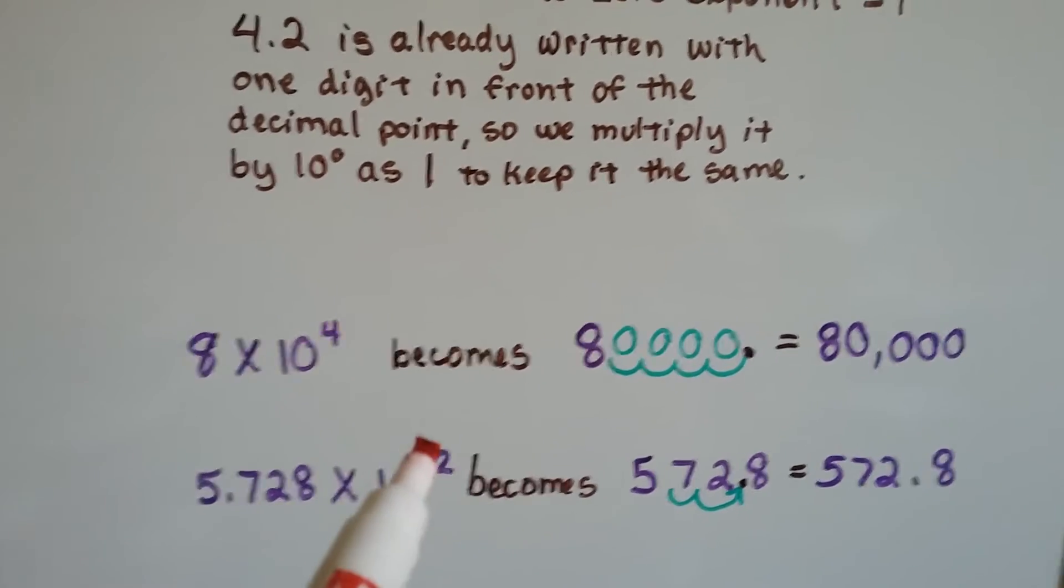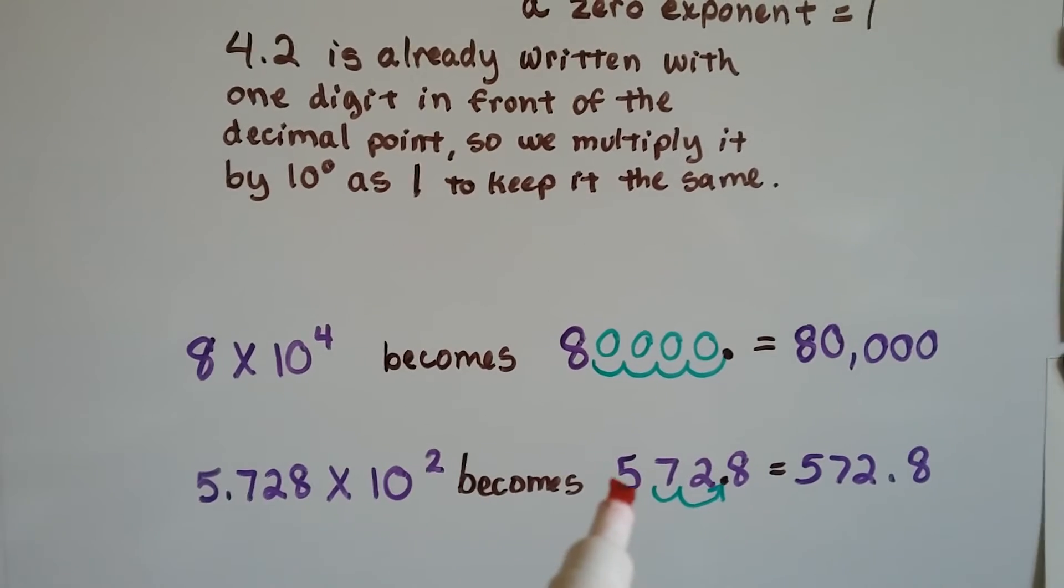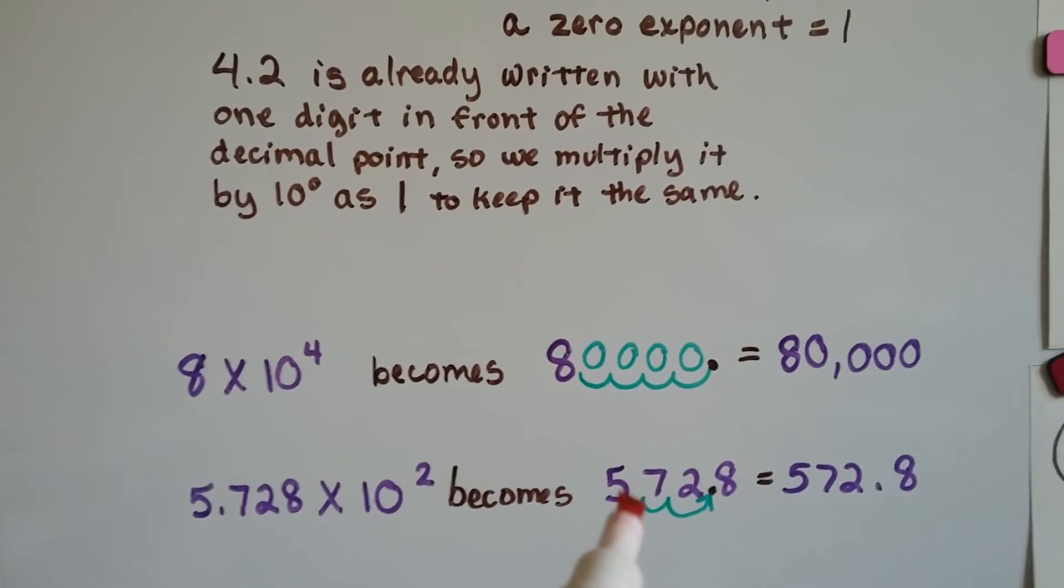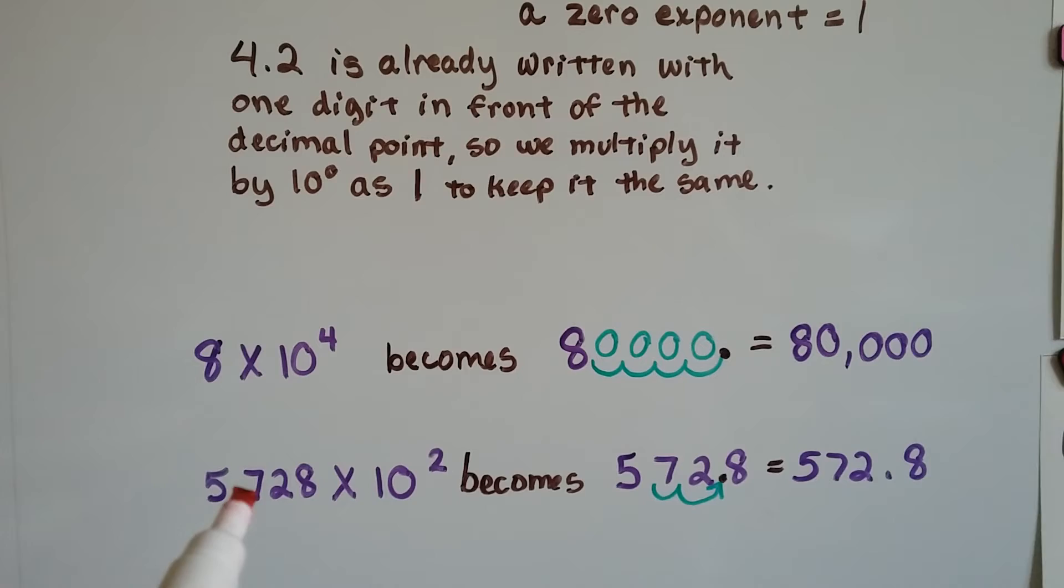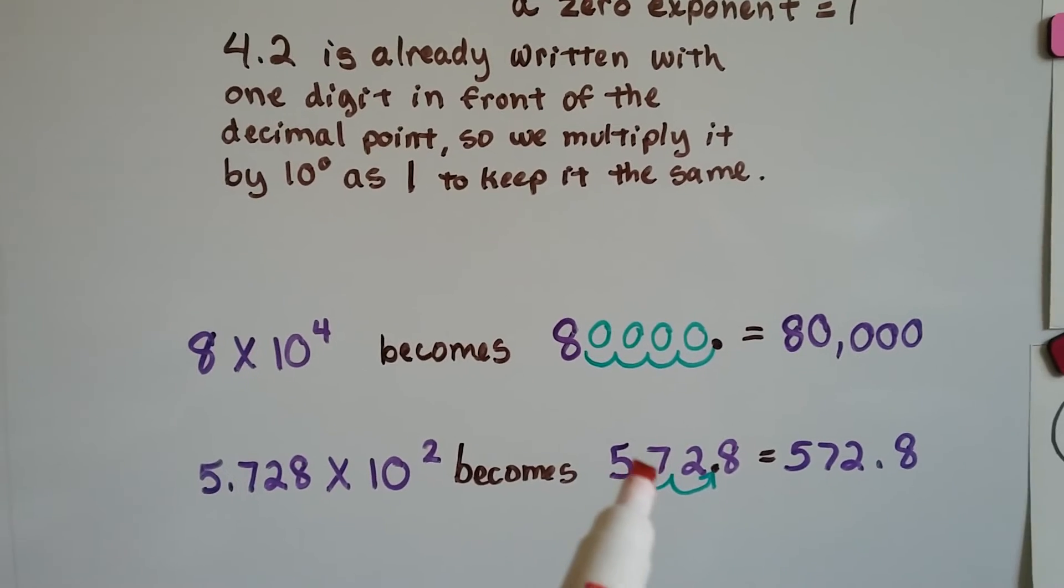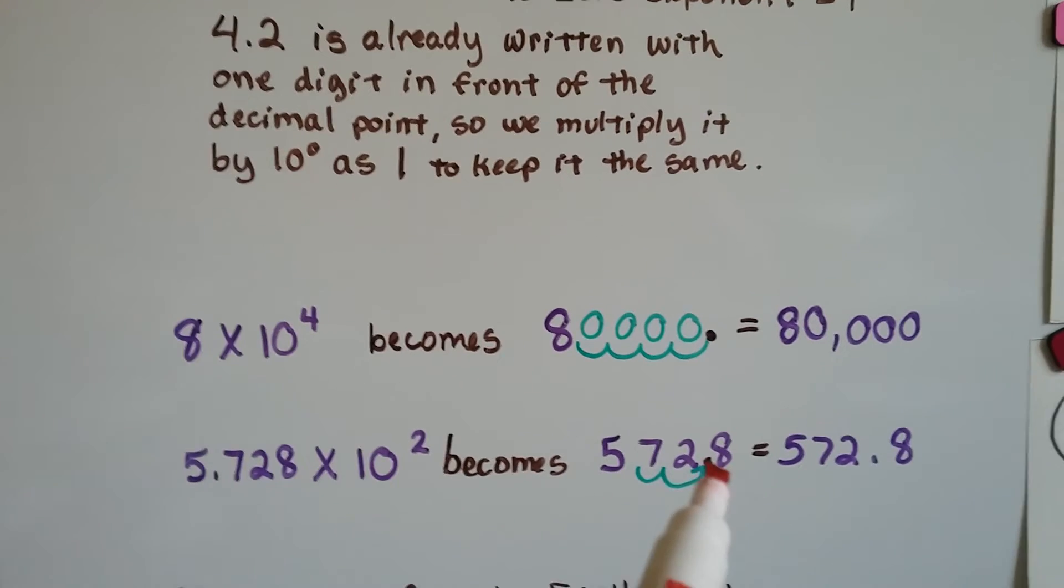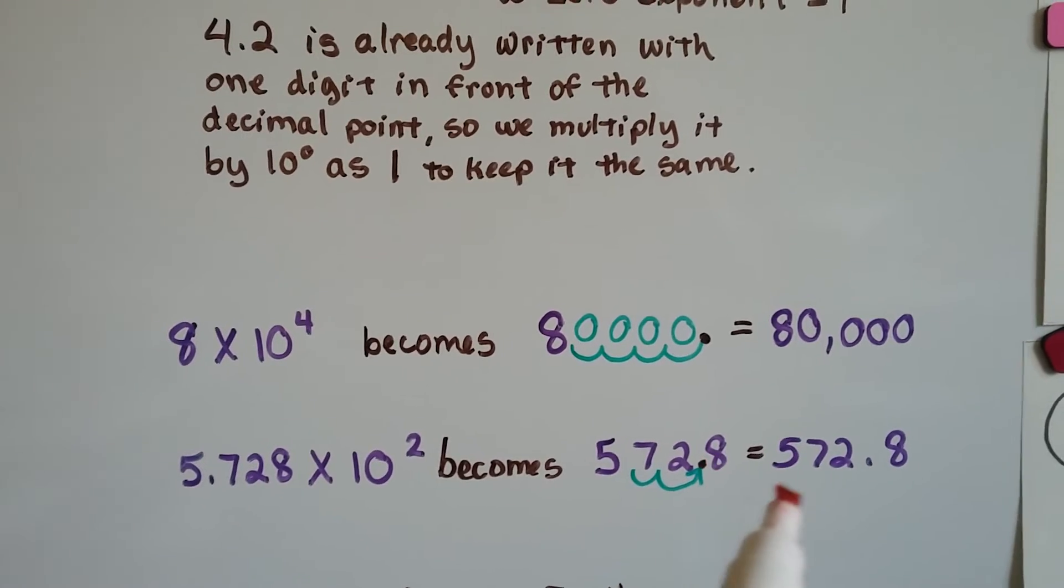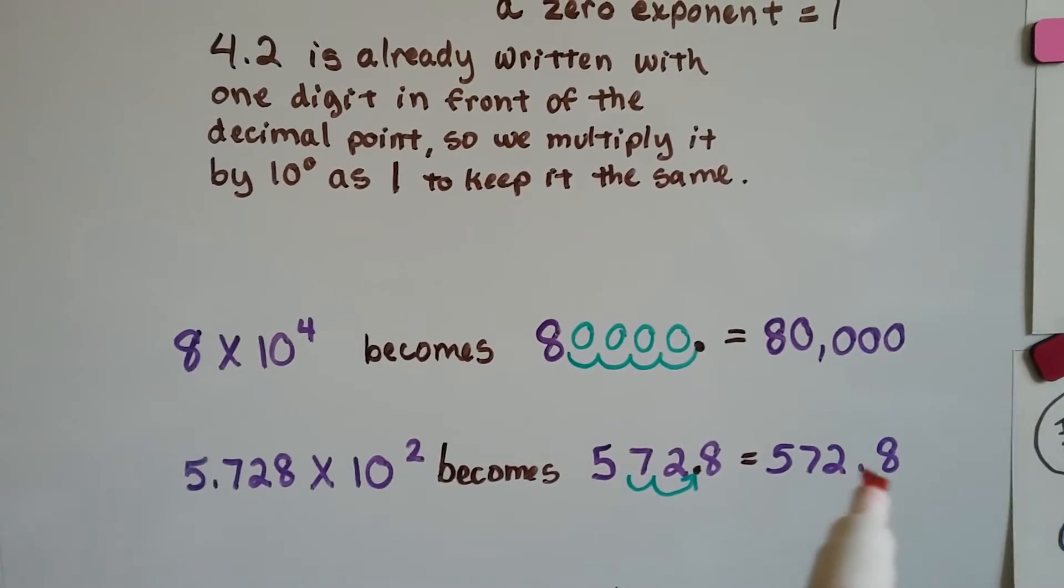5.728 times 10 to the second power becomes 5728, and we hop that decimal point from in between the 5 and the 7: 1, 2 hops, and it ends up between the 2 and the 8. So we've got 572.8.